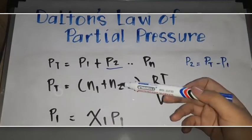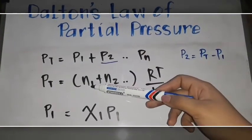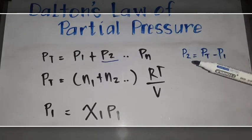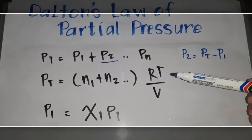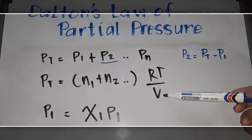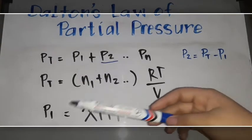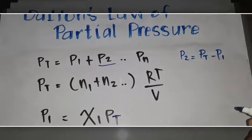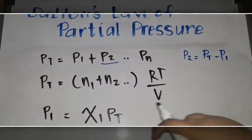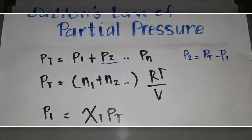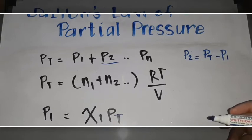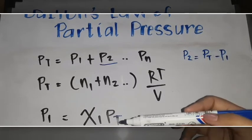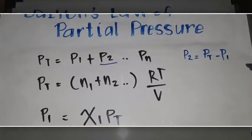The second formula is: total pressure equals (N1 plus N2) multiplied by RT over V. We use this formula when we are given moles, temperature, and volume. The third formula is: partial pressure of a gas equals chi (mole fraction) multiplied by the total pressure. We use this when finding the mole fraction, given the number of moles and total pressure to find the specific partial pressure of a given gas.